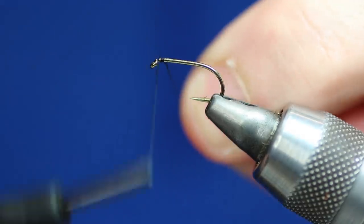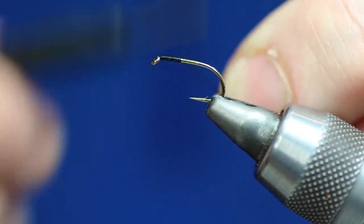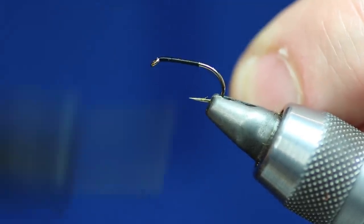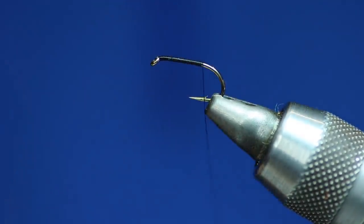So all I'm going to do is start the thread at the eye of the hook and run it down. Now you can tie these short or you can tie them a bit longer. It's up to you and just trim that off.